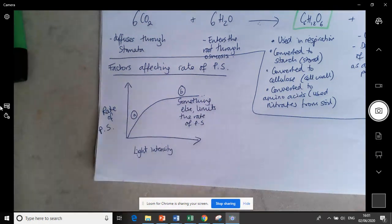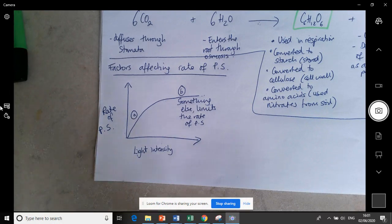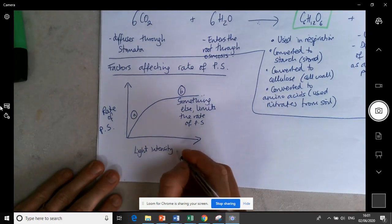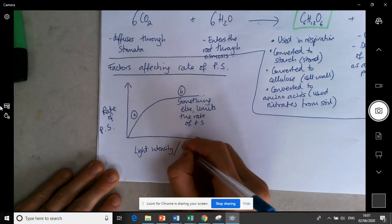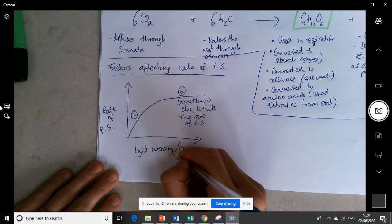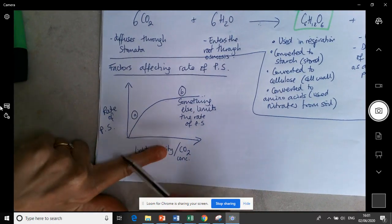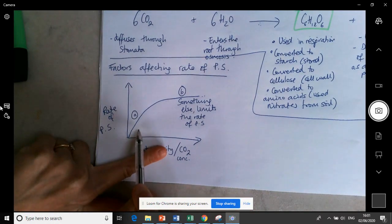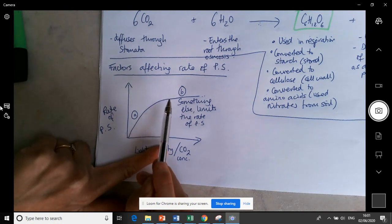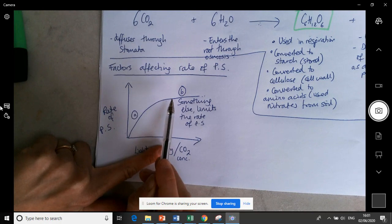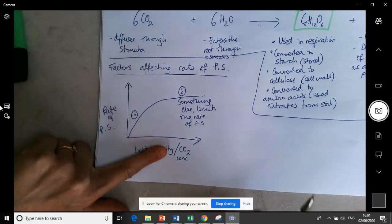This is a classic graph which comes up in many different questions. We can change this x-axis to many things. We could have the CO2 concentration there. So again if we look at CO2 concentration, as CO2 concentration increases the rate of photosynthesis increases up to a certain point where the graph plateaus or levels off and something else becomes the limiting factor.